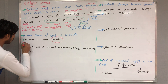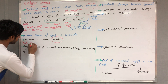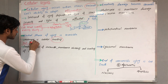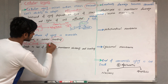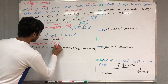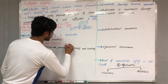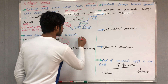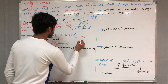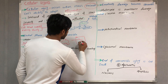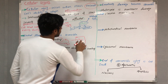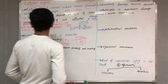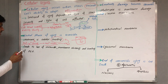In reversible cell injury, when there is no ATP, the sodium-potassium pump will not work. Sodium will accumulate inside the cell, followed by water entering the cell, causing the cell to swell.